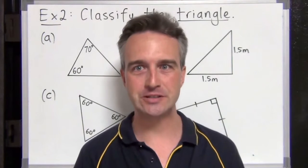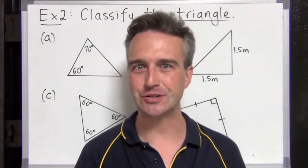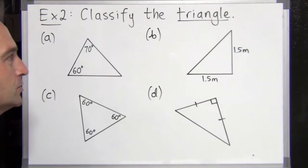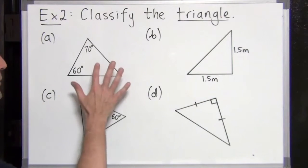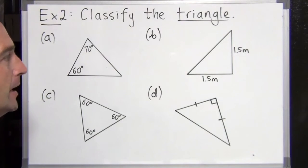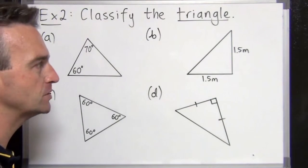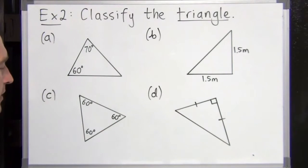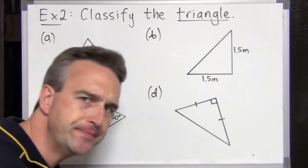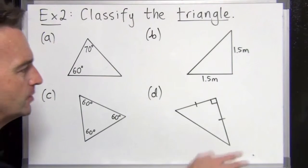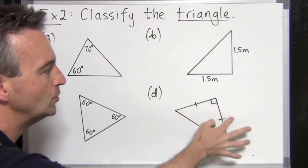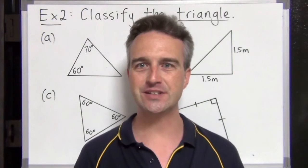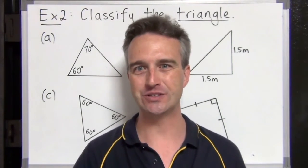Do you now feel confident about describing triangles? Good. It's now your turn — please try example two. Using what we've learned, describe these triangles as much as you can. Part a has two angles: 60 and 70 degrees. Part b has two sides both equal to 1.5 meters. Part c has three angles all equal to 60 degrees. Part d looks like a right angle with two equal sides — what would you call that triangle most accurately? Remember to share your answers in the comments, and thanks for watching.